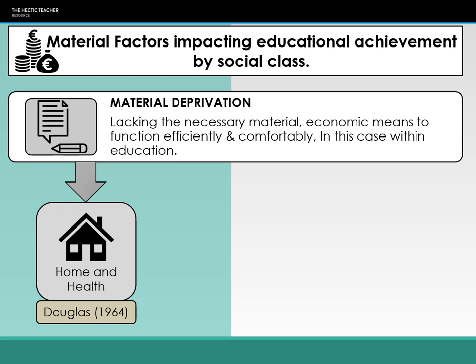Douglas also talks about poor diet. Those from low income families are more likely to have poorer diets. Cheap food tends to be low in nutrition and high in less healthy ingredients. It can lead to children having lower immune systems and not staying full for as long — for example, fast food is engineered so you only feel full for a couple of hours, whereas a home cooked meal keeps you full much longer.